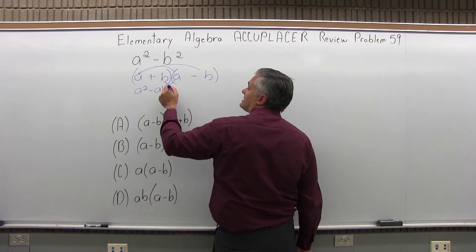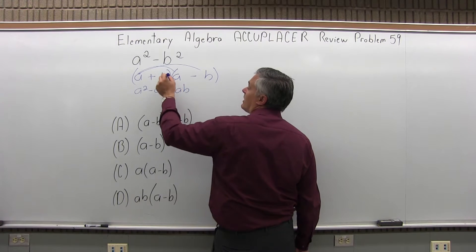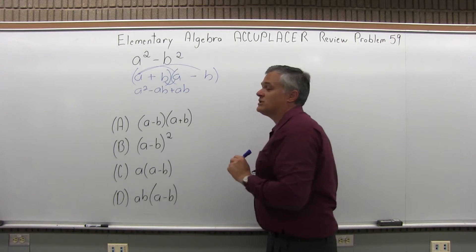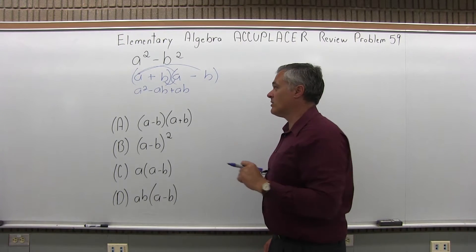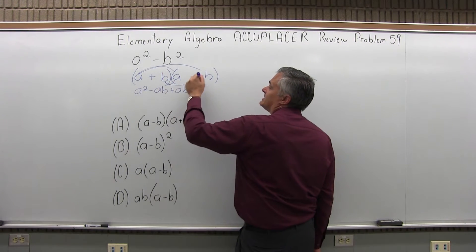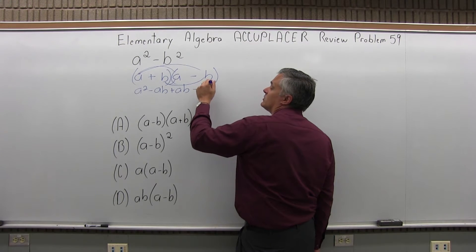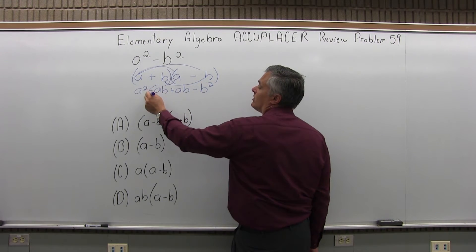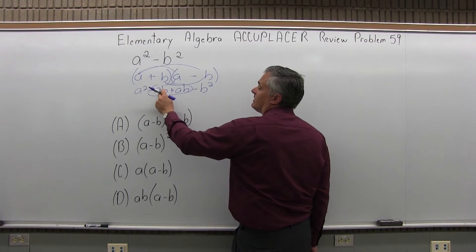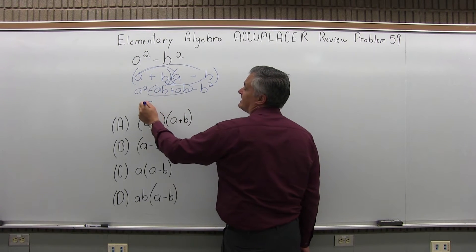b times a, both positive, is positive ab. I could write b, a, but it's traditional to write the variables in alphabetical order when you have more than one. And then b times negative b is minus b squared. And when I combine my like terms, the two pieces in the middle, negative ab and positive ab, just cancel each other out.